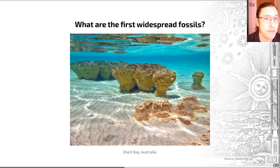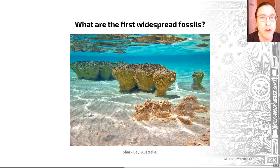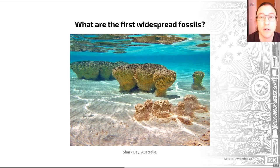Hence, stromatolites are very widespread for much of the big chunk of Earth history that comes after the origin of life and their first appearance on Earth.